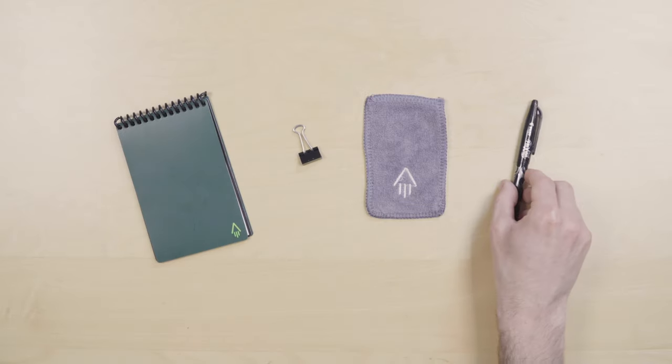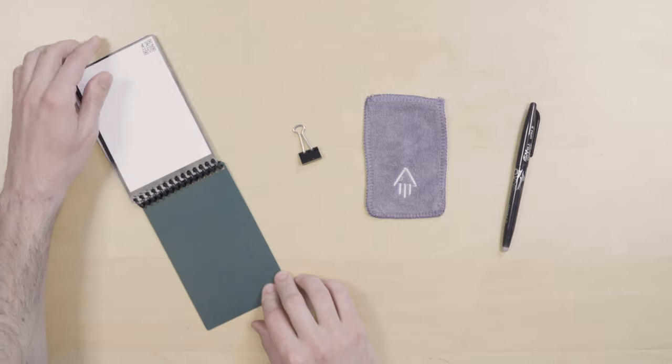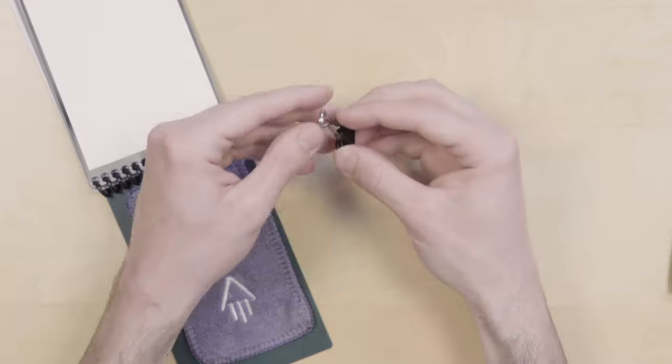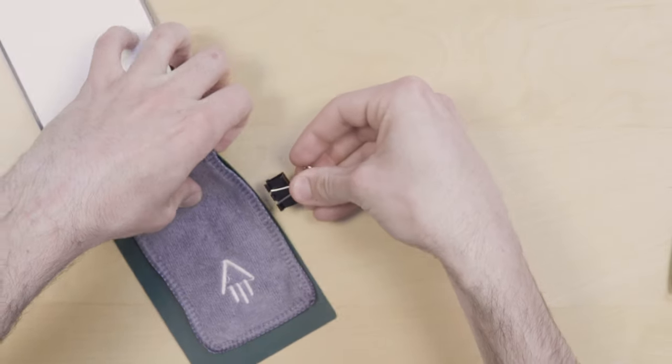To get started, open up your mini to the back cover and place the cloth on the mini. Open up your binder clip and attach it to the notebook. This will keep your cloth fastened but also create a gap that you can slide your pen into.